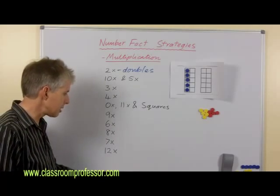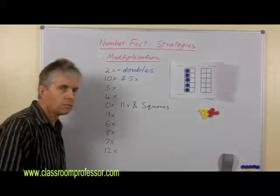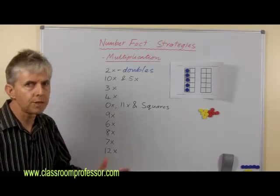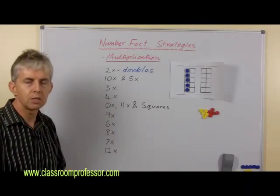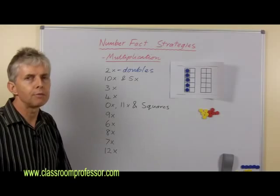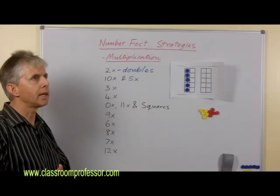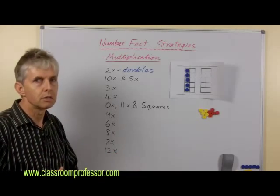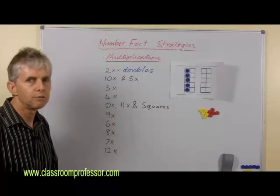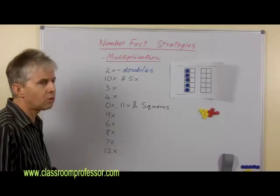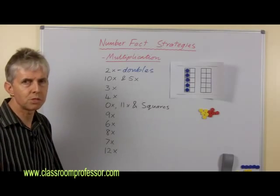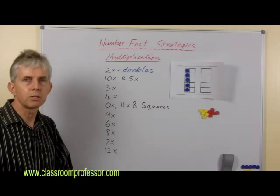Now students by this stage will almost certainly have done addition. Hopefully they have, they shouldn't be doing this if they haven't done addition. And so they'll already have learned the doubles as addition facts. So if you say, what's two times six? And they go blank. You go, well what's six plus six? Because that's a known fact. It's either doubles. And there are lots of examples that you can give them. And our website has a blog post on the two times.